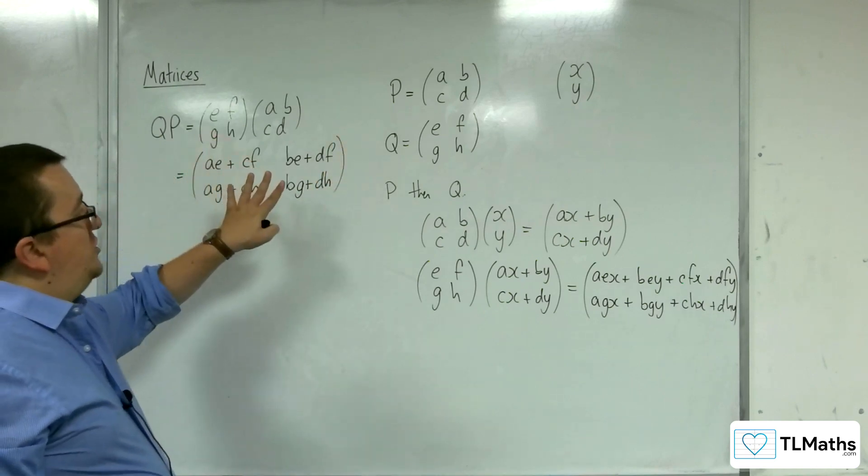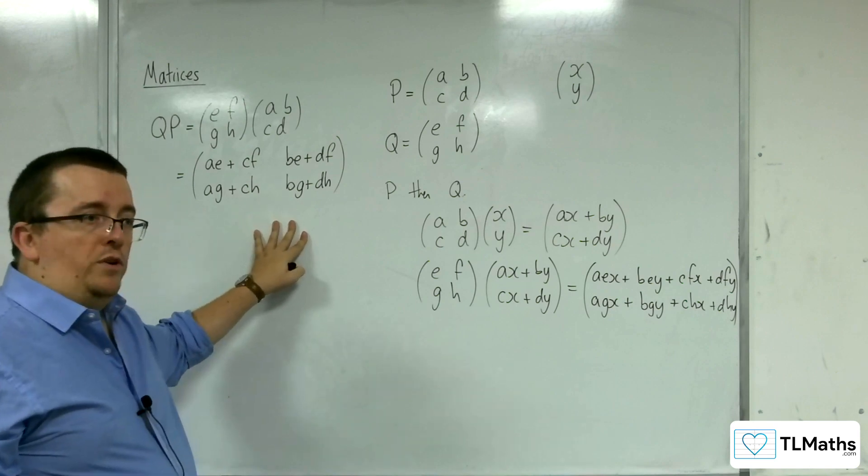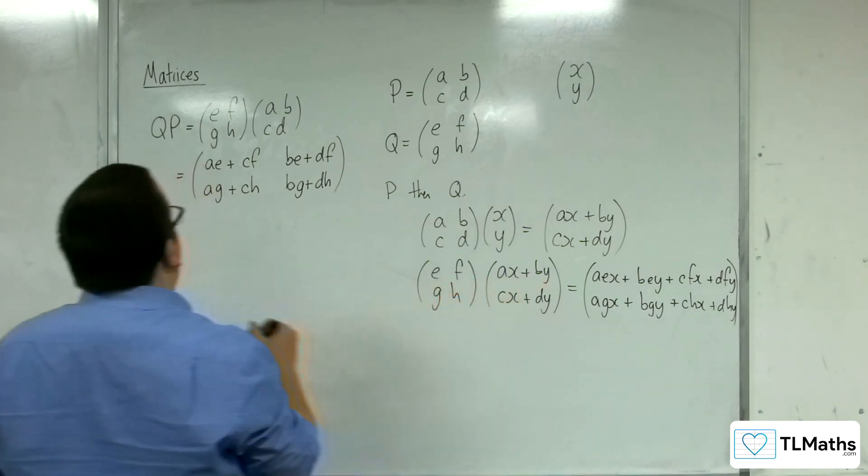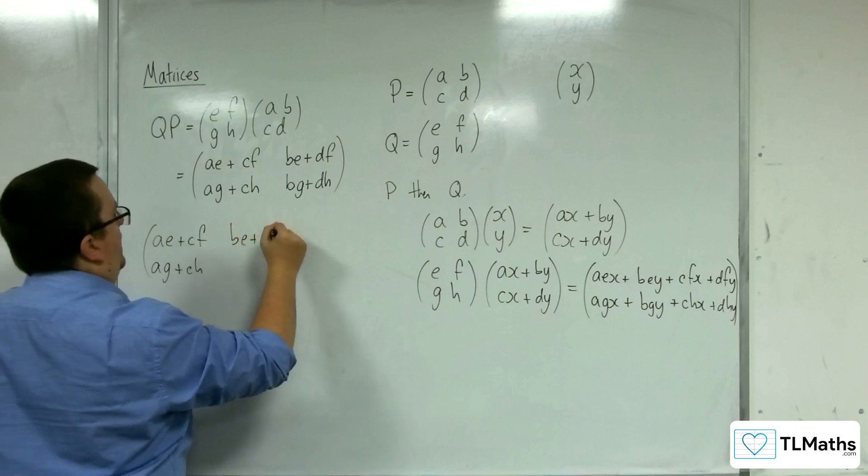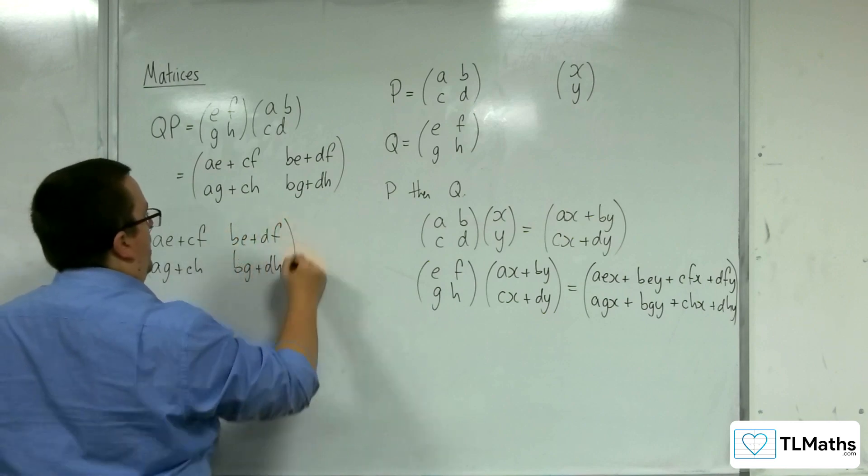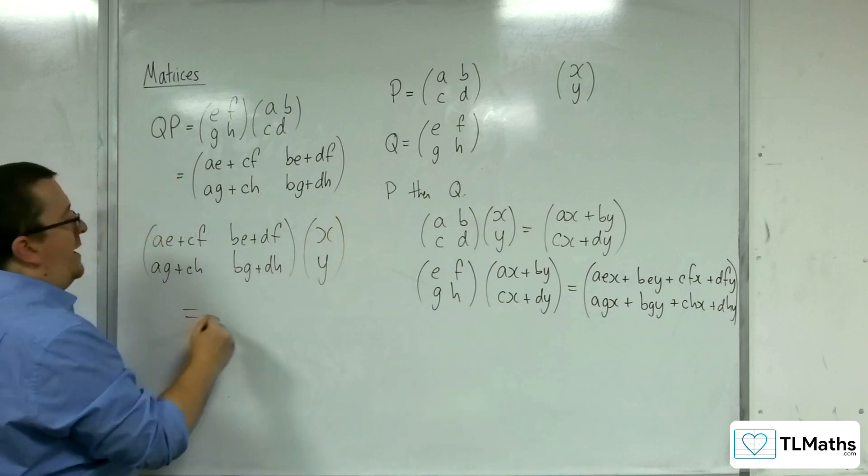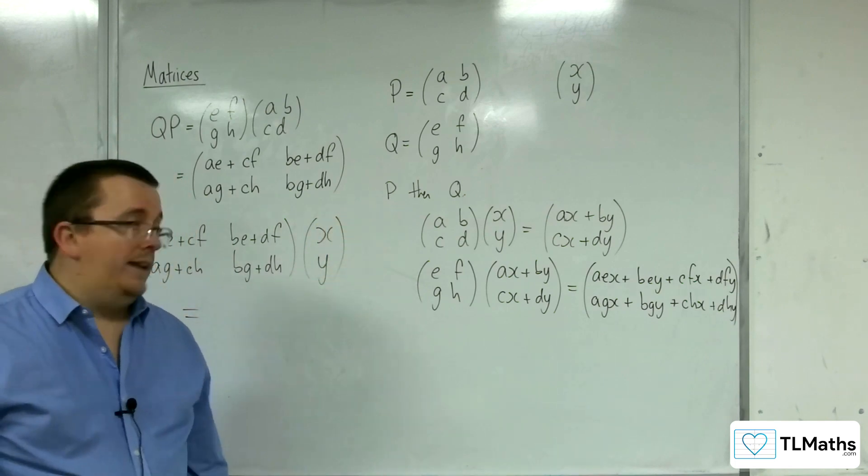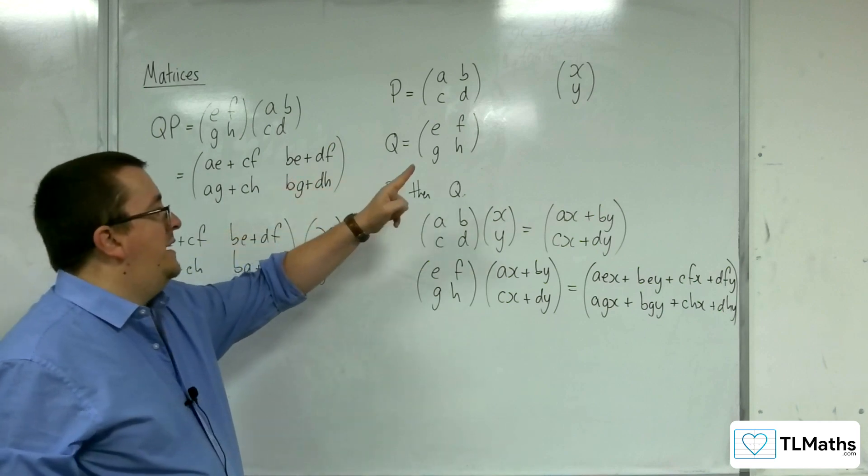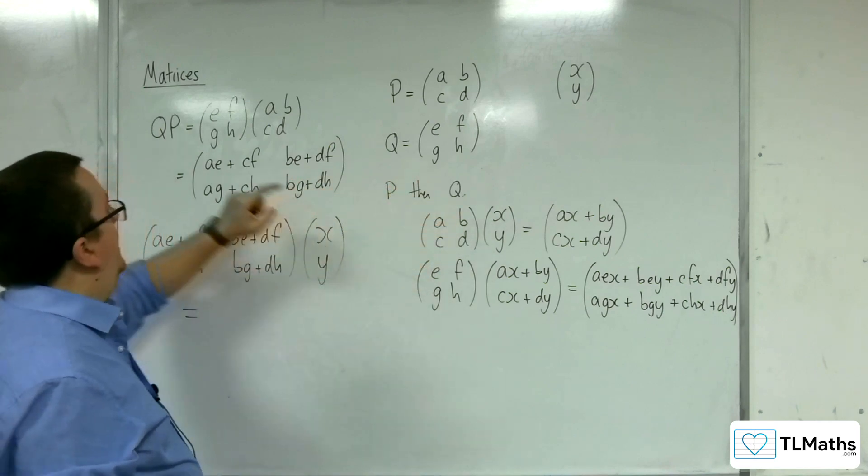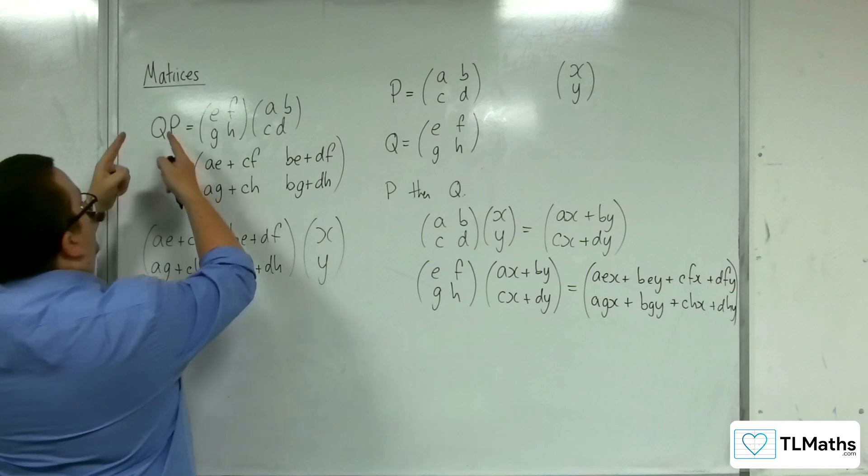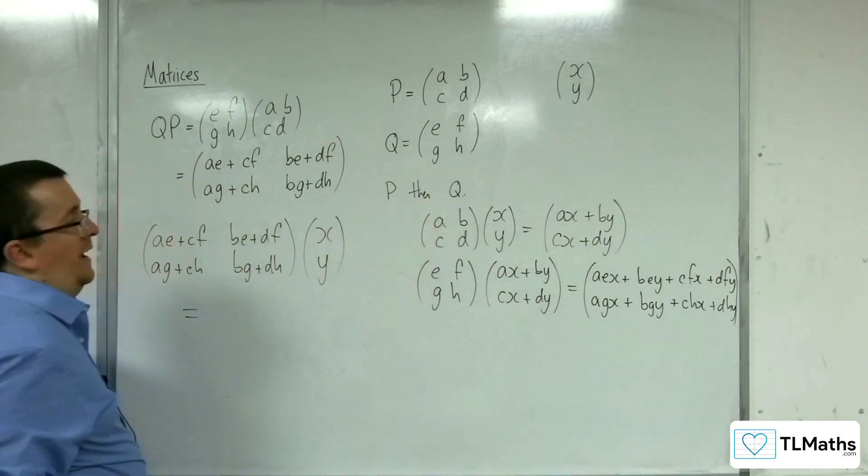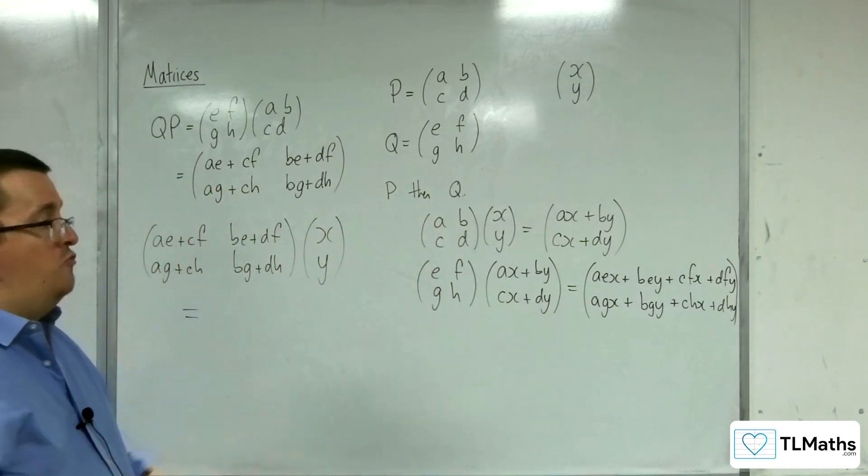So if I now just apply this matrix to the original coordinates, what I should end up with is precisely that. So A, E plus C, F, A, G plus C, H, B, E plus D, F, B, G, plus D, H, multiplied by my original coordinates. If I end up with the same thing, then it is clear that doing P then Q as an order of transformations is the same as doing QP, and that means that this is the correct order for that to happen.